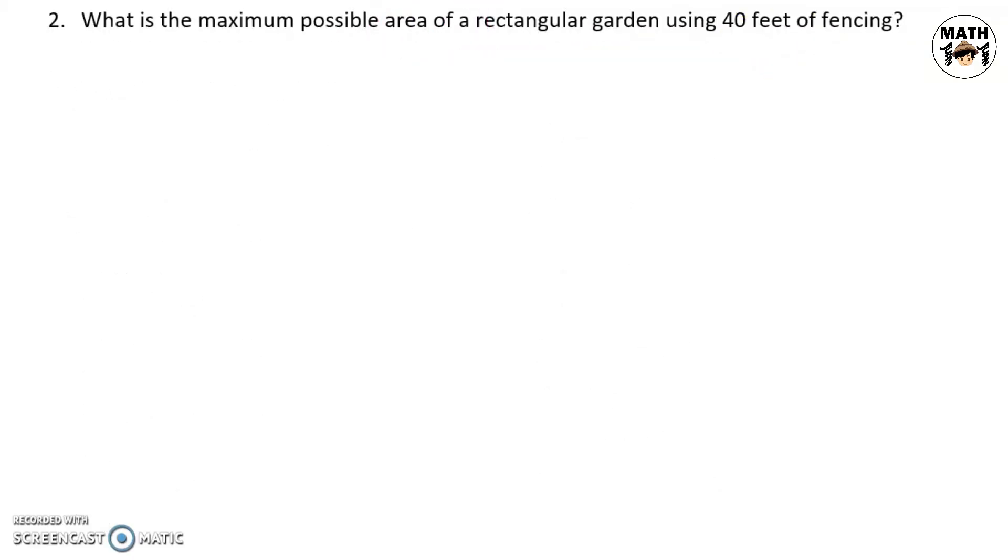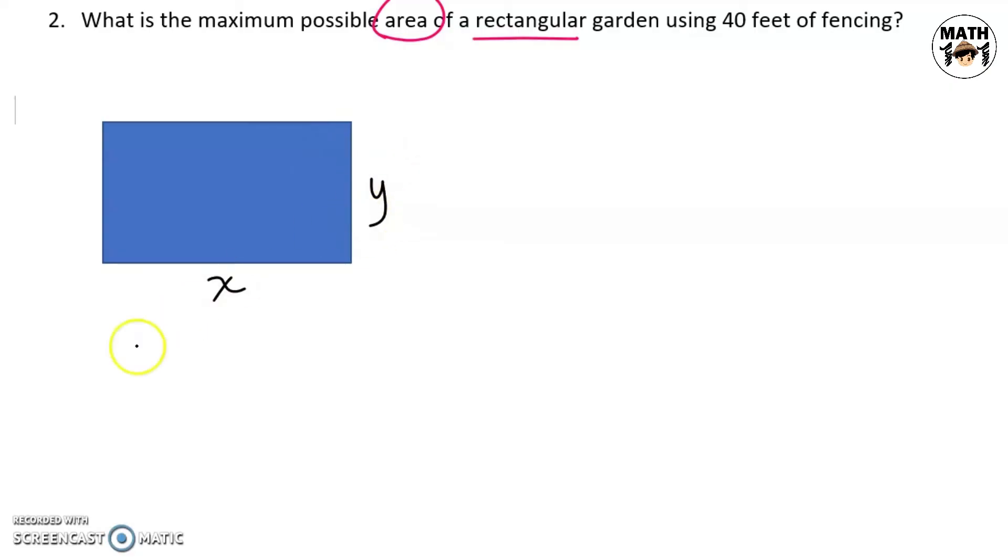Problem number 2: what is the maximum possible area of a rectangular garden using 40 feet of fencing? Ang target natin ma-maximize is the area of a rectangular garden. As much as possible, let us try to draw a figure for this. We have a rectangular garden. Drawing their dimensions, let's represent the length as x and the width as y. So, ang variable natin ngayon ay x, y and the area, which is equal to the product of the length and the width.